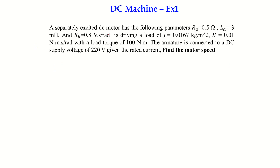In this short video I will solve two examples. The first example: a separately excited DC motor has the following parameters — the armature resistance is 0.5 ohm, the armature inductance is 3 millihenry, and the back-EMF constant is 0.8 volt·second per radian. It is driving a load with inertia 0.167, viscous friction 0.01, and a constant load of 100 newton·meter. The armature is connected to a DC supply of 220 volt. Given the rated current, we need to find the motor speed at steady state.